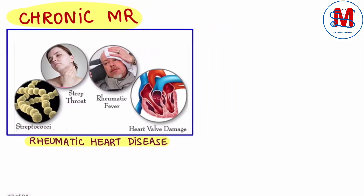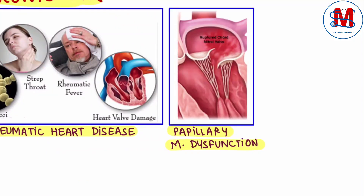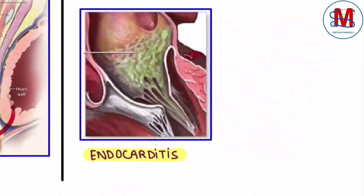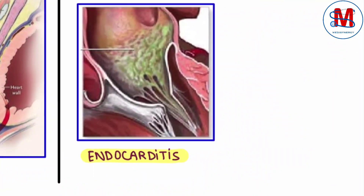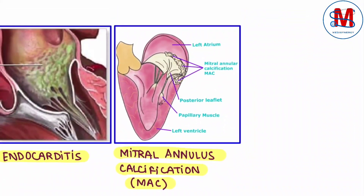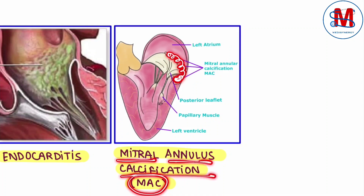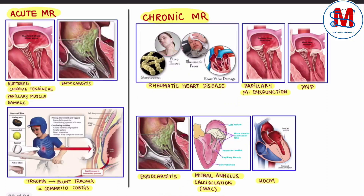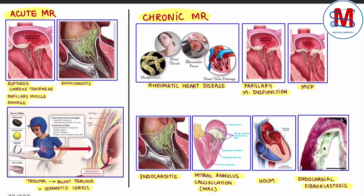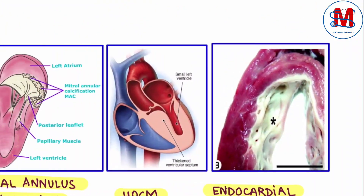For chronic mitral regurgitation: rheumatic heart disease, papillary muscle dysfunction, mitral valve prolapse, endocarditis, calcification of mitral valve annulus — which is called MAC, mitral annulus calcification — HOCM which is hypertrophic obstructive cardiomyopathy, and endocardial fibroelastosis, where the heart's wall undergoes thickening.